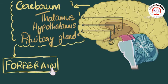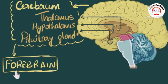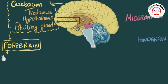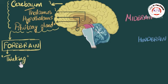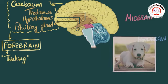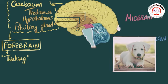What does the forebrain do? Beyond voluntary functions, one major function is thinking — including learning ability, speech, and language. Another important function is sensing: the reason you can see a picture is because your eyes send signals to the brain and your forebrain does the processing. Similarly, you can hear because of your forebrain — all five senses are processed by your forebrain.